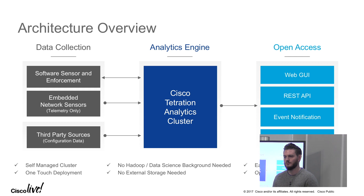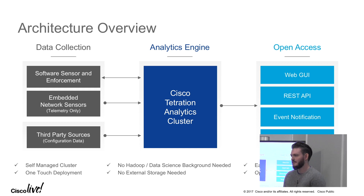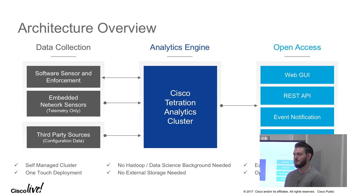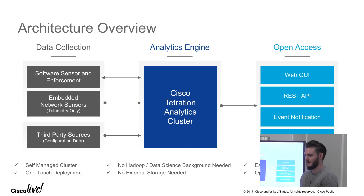With the Tetration 2.0 release, we can also enforce policy using the software sensor inside the guest workload itself. We can also augment flow data with third-party configuration details — for example, load balancers that have a VIP and multiple backend pools. We can pull in configuration from those devices to provide more insight into the applications running on top of your data center. All of this information is streamed to the Tetration analytics cluster, which is a big data appliance leveraging open source big data technology to provide interesting insights.